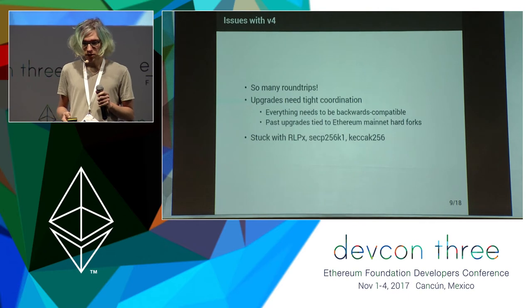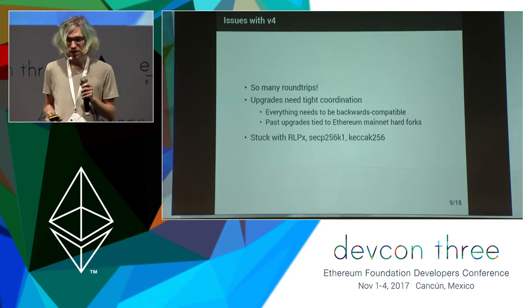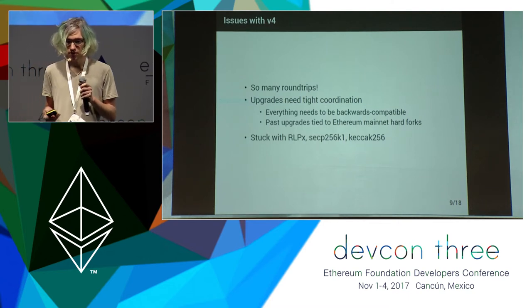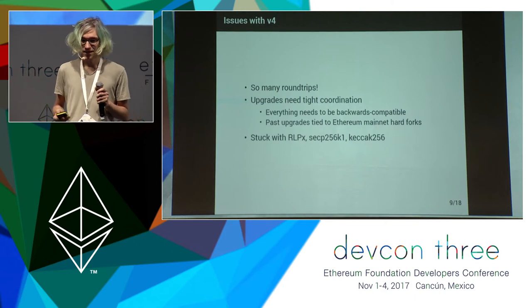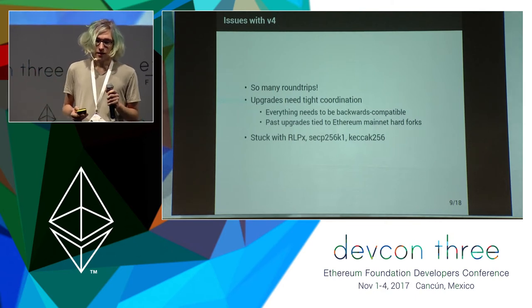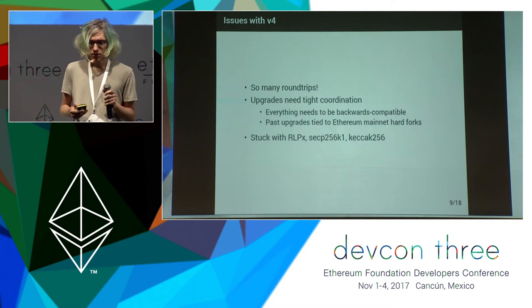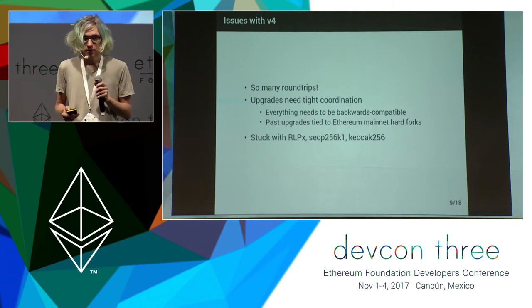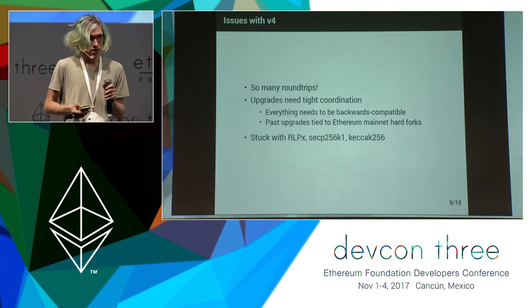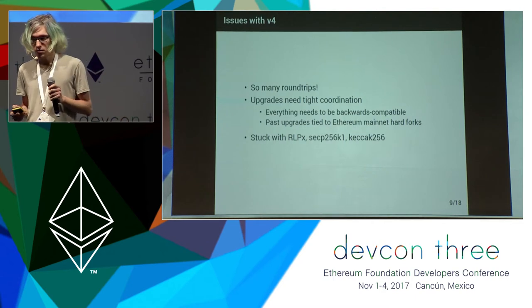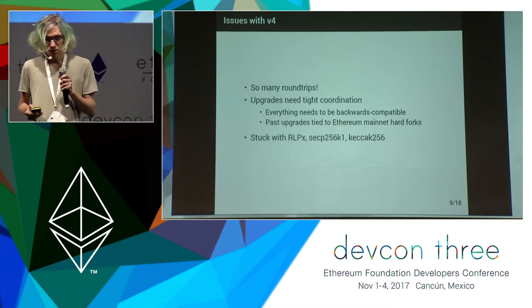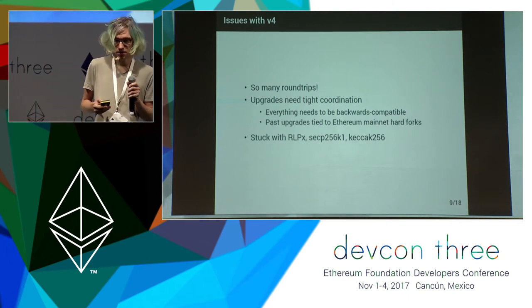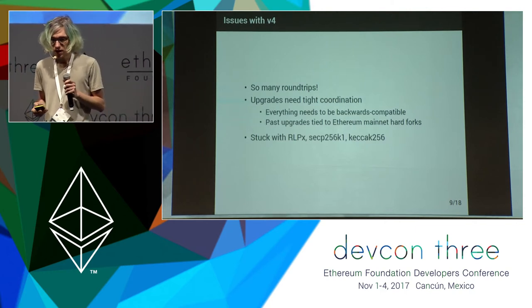So what can we improve? First, it's kind of annoying that there are so many round trips just to figure out whether someone is on the right blockchain. It would be really nice to know that before even connecting. Another issue is that the whole system is basically frozen — making any change to any of the protocols requires really tight coordination, requires implementation consensus, and any change we make needs to be backwards compatible.